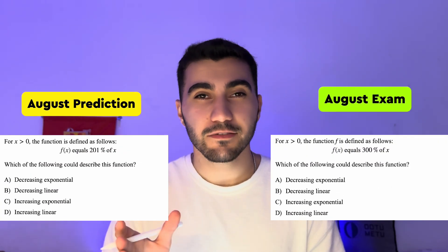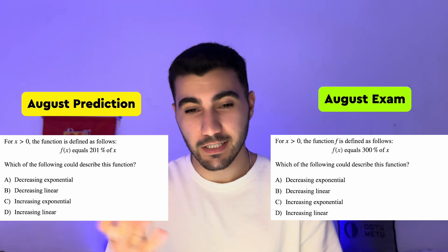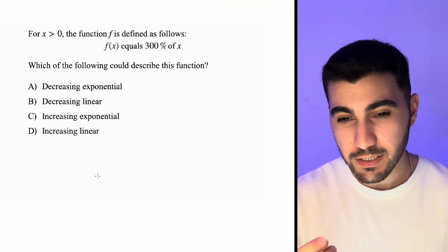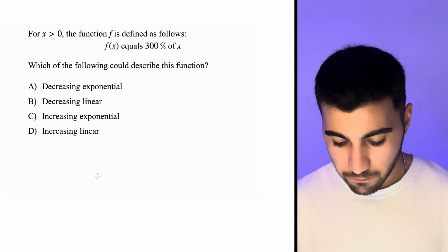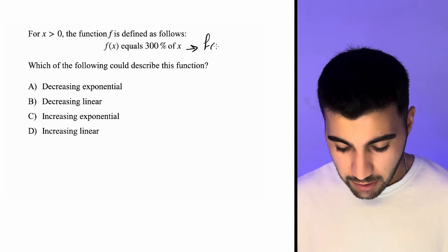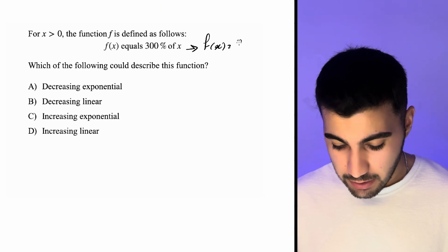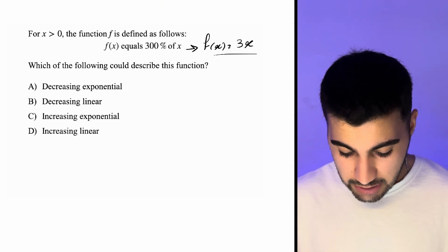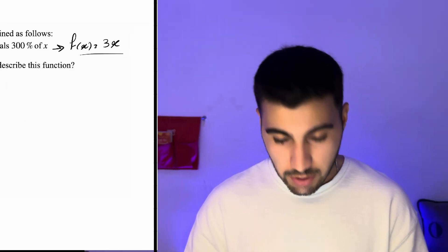The next two questions are copy-pasted versions of each other — let me know in the comments if you've seen this question. For x being positive, the function f is defined as f(x) = 300% of x. Translating this, 300% of x equals 3x, which is an increasing linear function. So the answer is choice D.